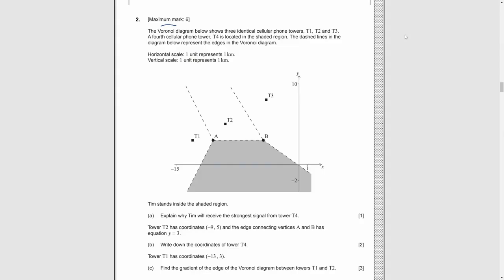Question 2. A Voronoi diagram is shown. T1, T2, T3 are 3 towers, and T4, the 4th tower, is located somewhere in the shaded region. Dashed lines represent the edge. Now Tim stands inside the shaded region. For part A, we need to explain why Tim will receive the strongest signal from T4. Very easy. Since inside the shaded region, all the points are closest to T4 instead of the other towers.